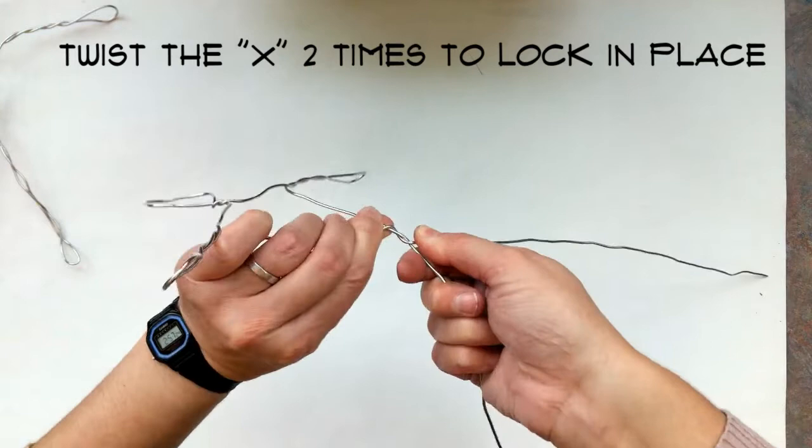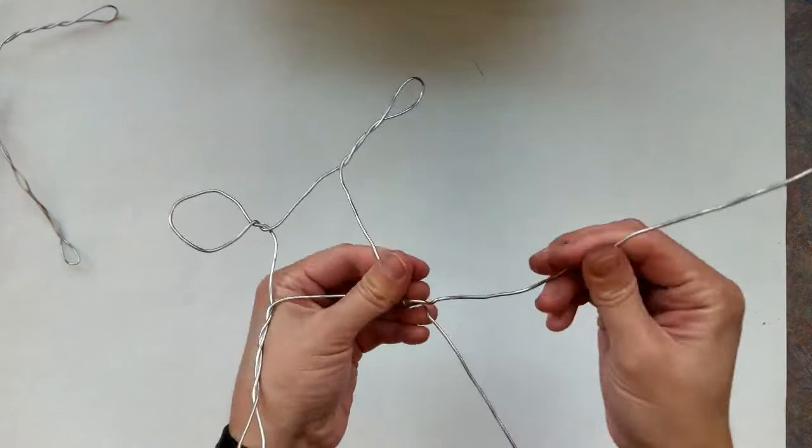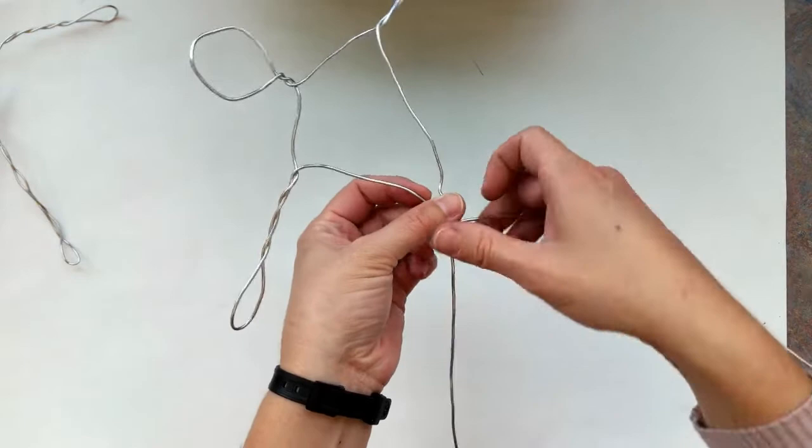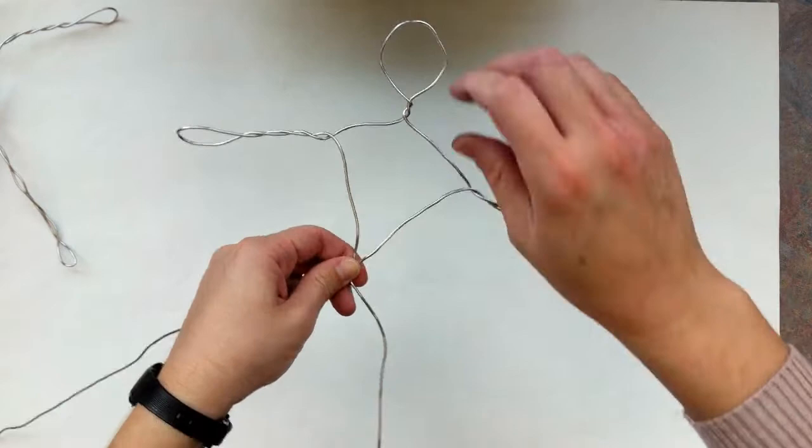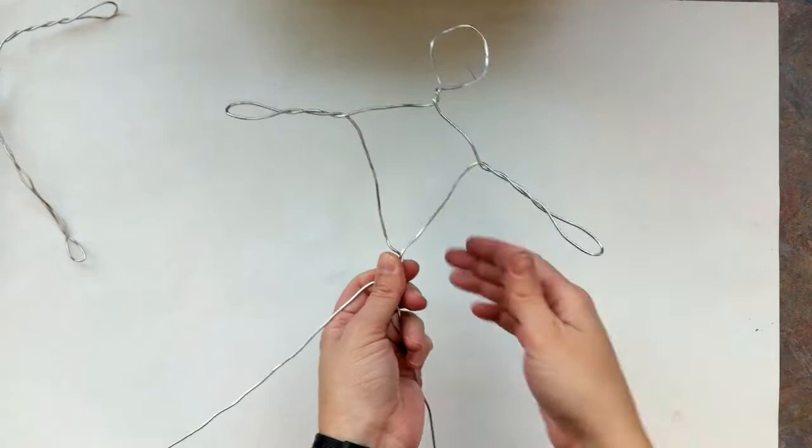So I'm going to just demonstrate that one more time. Sometimes it comes undone, so you might do this and then it comes undone and you might do it again. So I'm going to cross them so that they make an X. You can see the X right here. I'm going to take my twisty fingers on one side, twisty fingers on the other, and go in opposite directions. One twist and two twists. There I have my body.